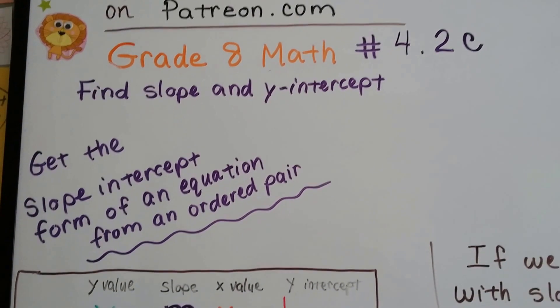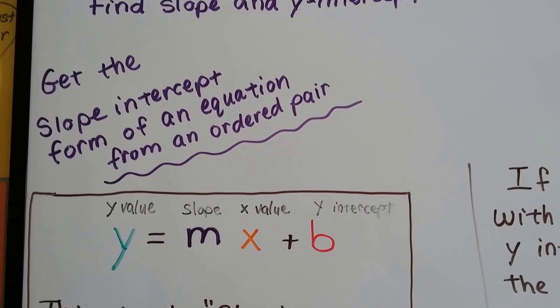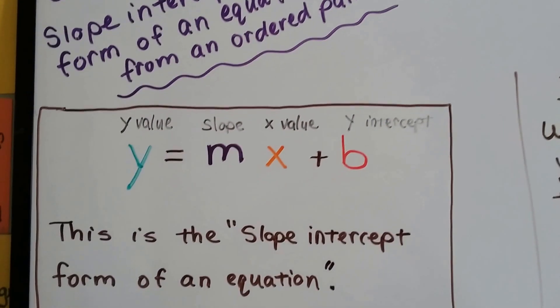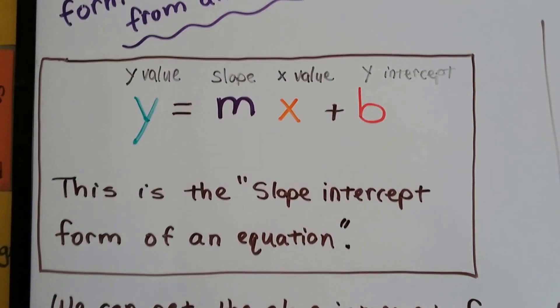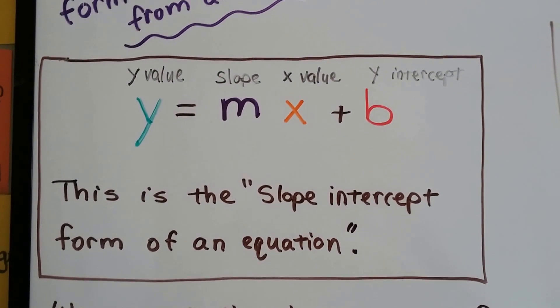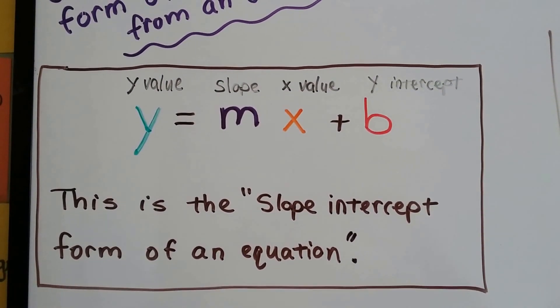Grade 8 Math number 4.2c: Get the slope-intercept form of an equation from an ordered pair. We learned in the last video that this is the slope-intercept form of an equation: y equals mx plus b.